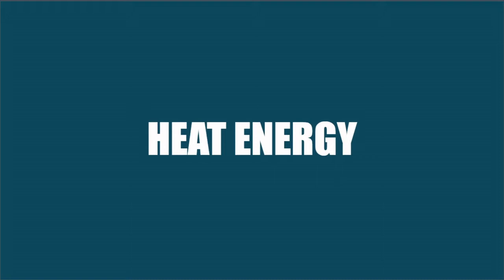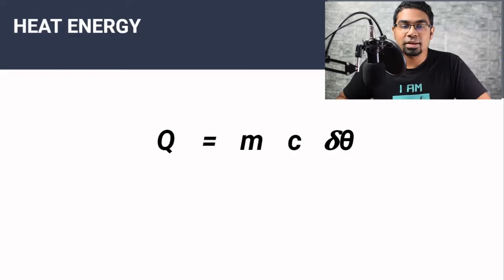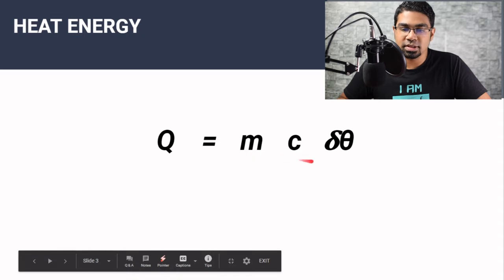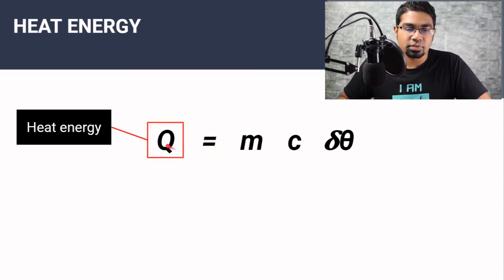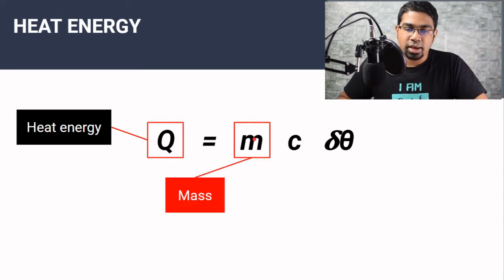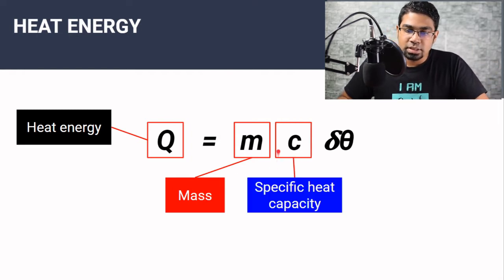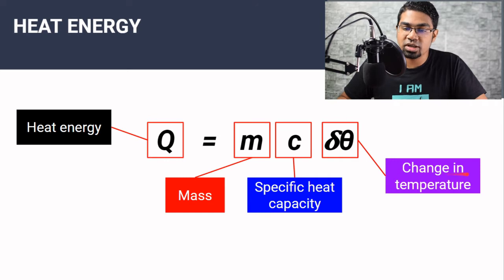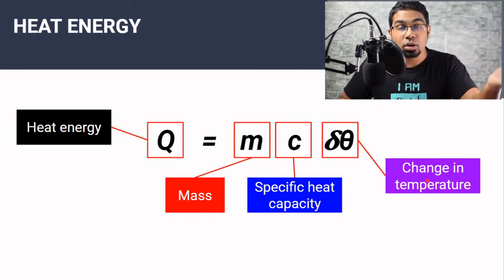The formula for heat capacity begins with the formula for heat energy. The formula is Q equals MC delta theta. Q is for heat energy — the heat energy that is gained or lost by a substance. M is the mass of the substance from which heat is gained or lost. C is the specific heat capacity of the substance. And delta theta is the change in temperature — delta is for change, theta is for temperature.